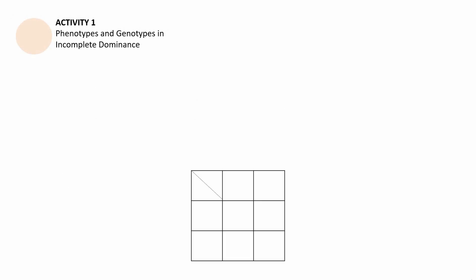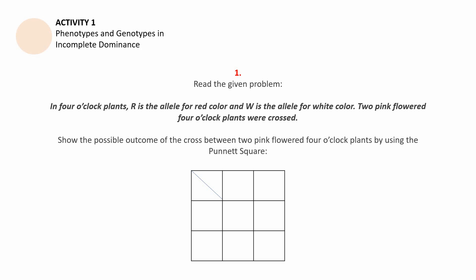For activity number 1, focus on the following. Number 1, read the problem. In 4 o'clock plants, R is the allele for red color and W is the allele for white color. Two pink-flowered 4 o'clock plants were crossed. Show the possible outcome of the cross between two pink-flowered 4 o'clock plants by using the Punnett Square. I will be giving a moment to do this part of the activity. If you have continued to watch this video, that means you're ready for the second part.